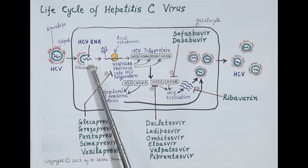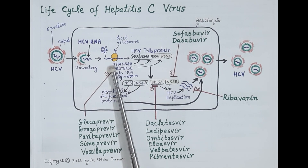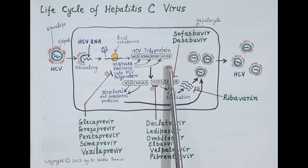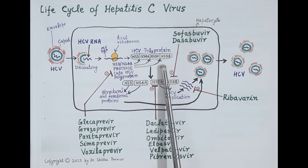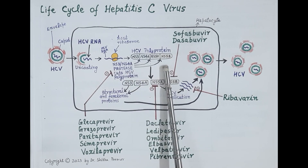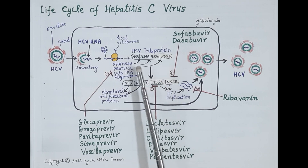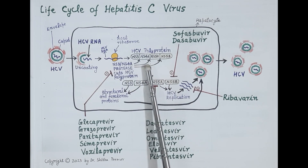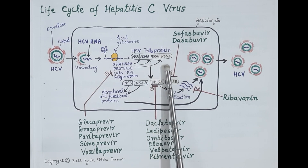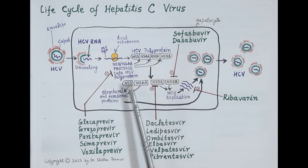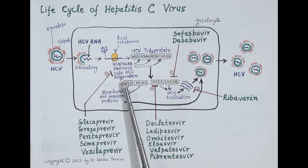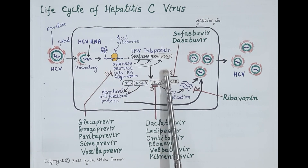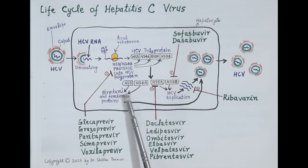This viral RNA is translated and a polyprotein is produced. This viral polyprotein is a large protein consisting of different proteins joined to each other: NS3, NS4A, NS5A, and NS5B. A very important enzyme, NS3/NS4A protease, cuts this polyprotein into individual active proteins.